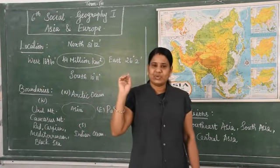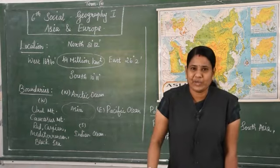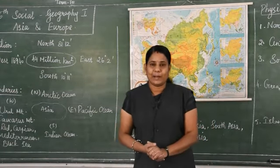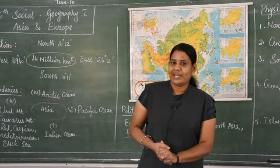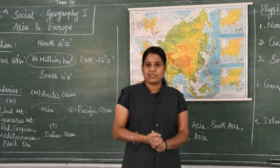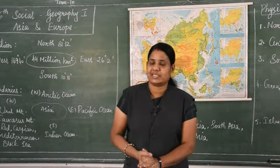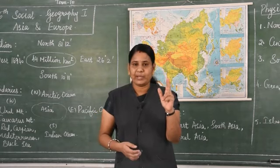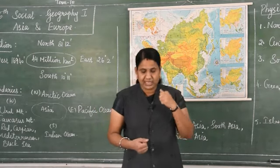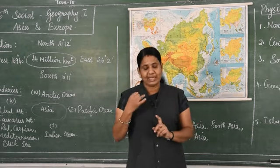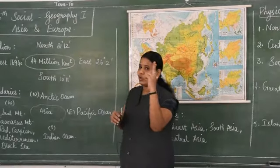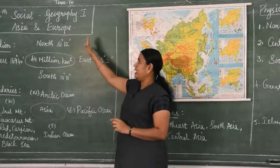When I say Asia and Europe, you can immediately guess what we are going to discuss. In the first term, we already completed the continents. How many continents are there? Seven continents: Asia, Africa, South America, North America, Antarctica, Europe and Australia. Among the seven, today we are going to discuss only two continents - Asia and Europe.